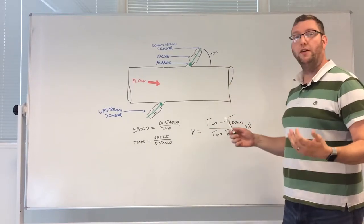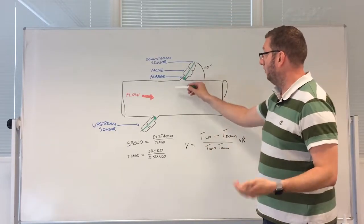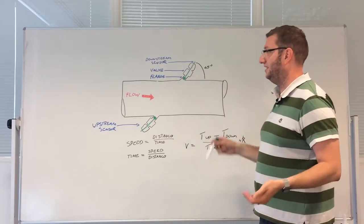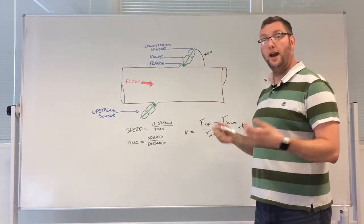So here on the board I've drawn a general arrangement for how our system works. First of all we've got a pipe, a steel pipe, now that could be 6 to 60, 70, 80 inches in diameter, it really doesn't matter. Either side we have our sensor arrangement.